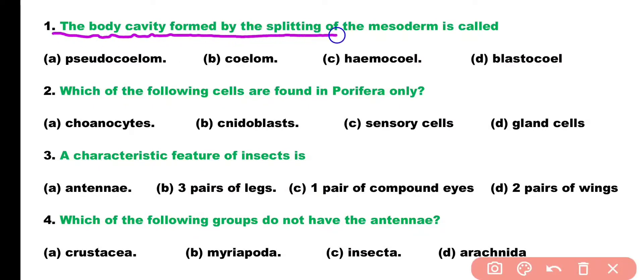Body cavity formed by splitting of mesoderm is called: pseudocoelom, coelom, hemocoel, or blastocoel? Correct answer is Option A. Pseudocoelom is a body cavity that is formed by splitting of mesoderm and it is present in nematodes.